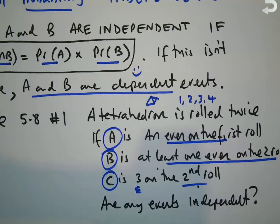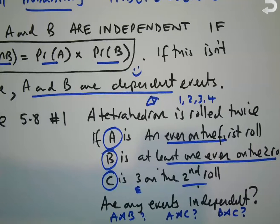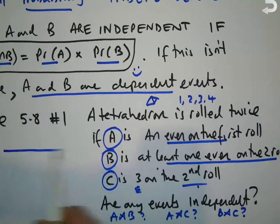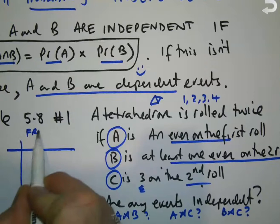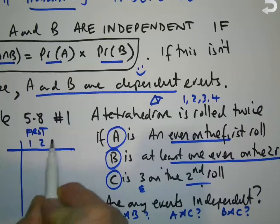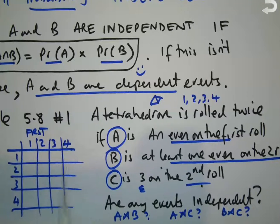Are any of these events independent? That is, are A and B independent? Are A and C independent? Or are B and C independent? That's what the question is asking. I need some way of representing the sample space when rolling a tetrahedron twice. Because it's four by four, a tree diagram would be quite large at 16 outcomes. But a lattice diagram is really quite useful when rolling two dice or having two events with a number of outcomes.